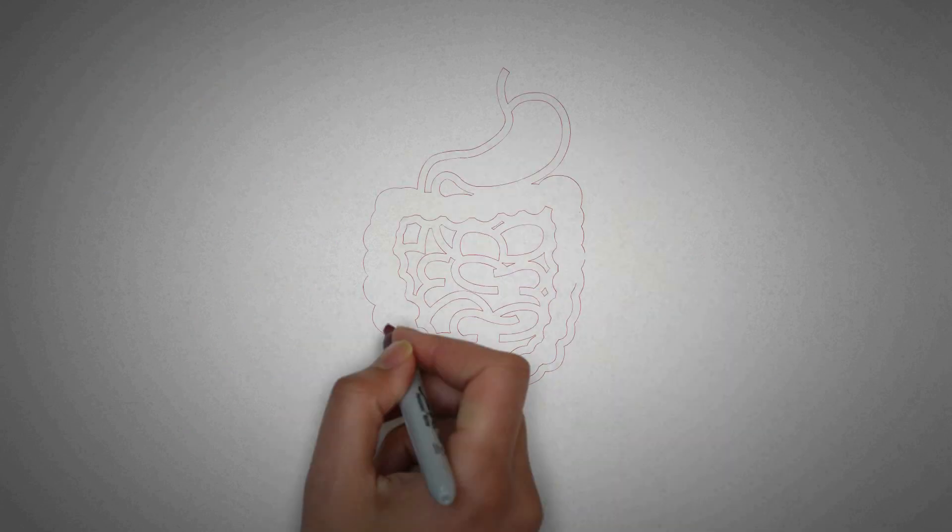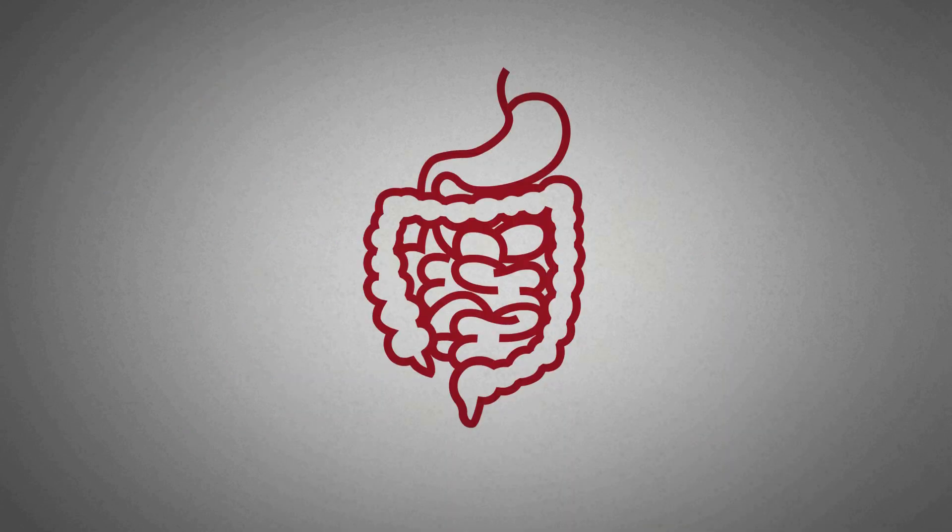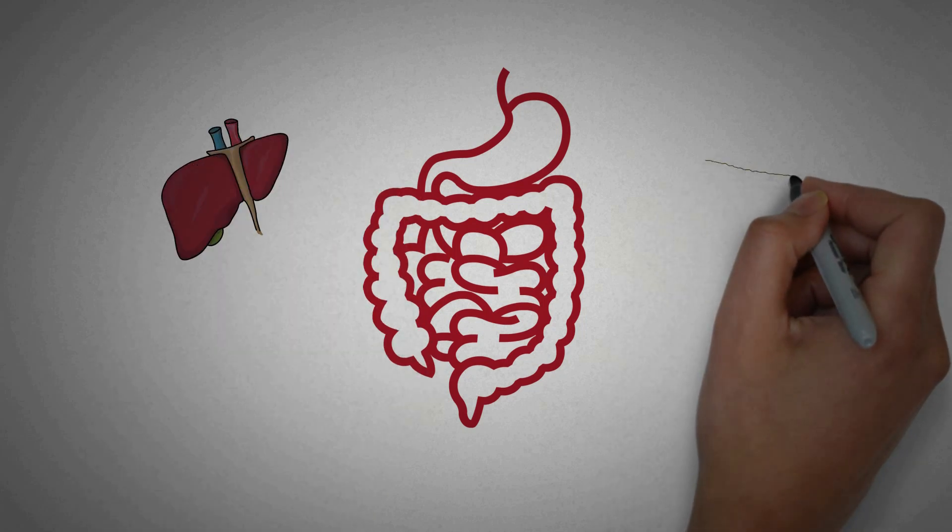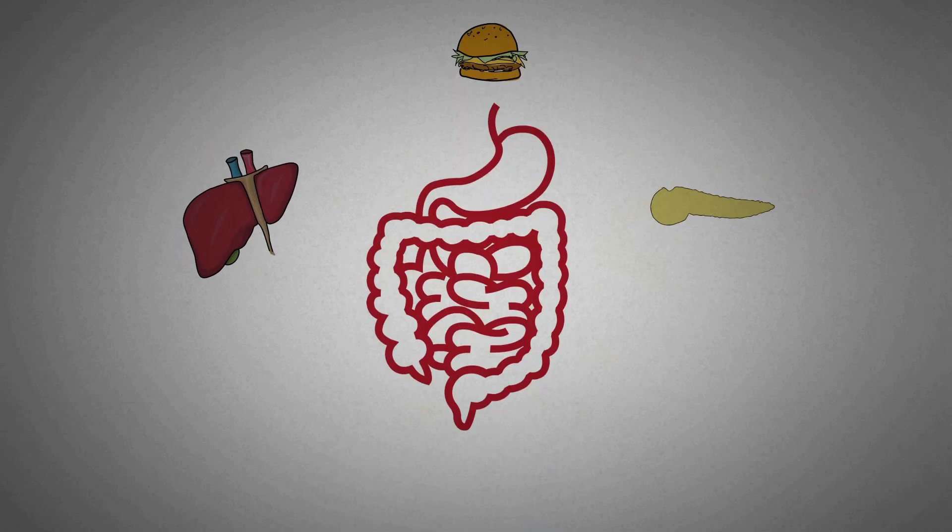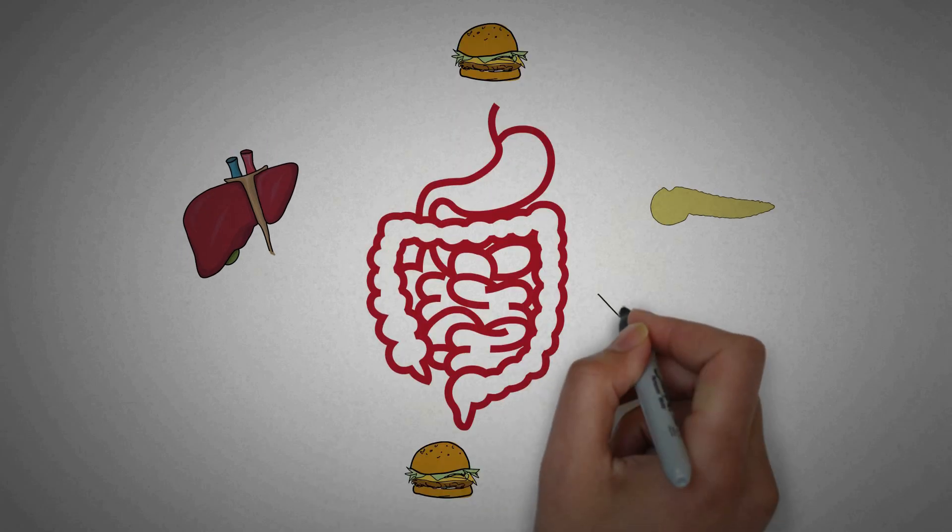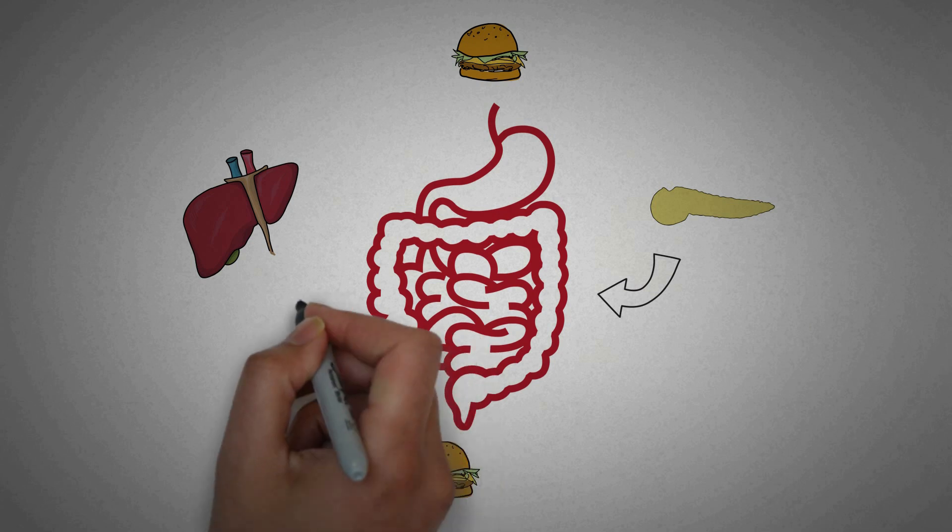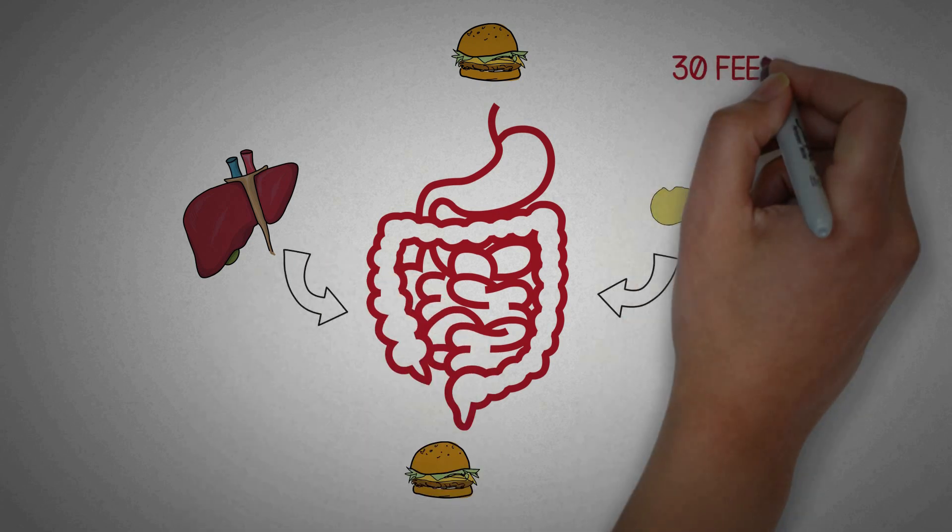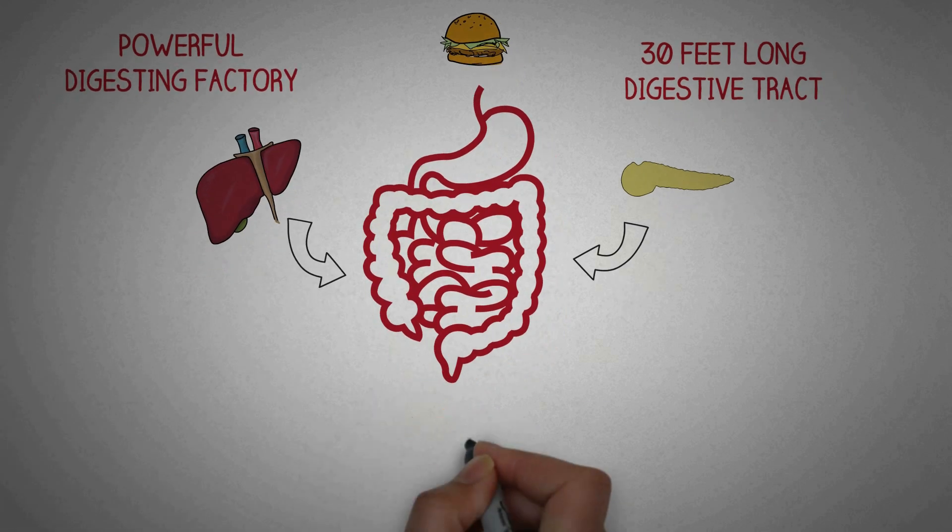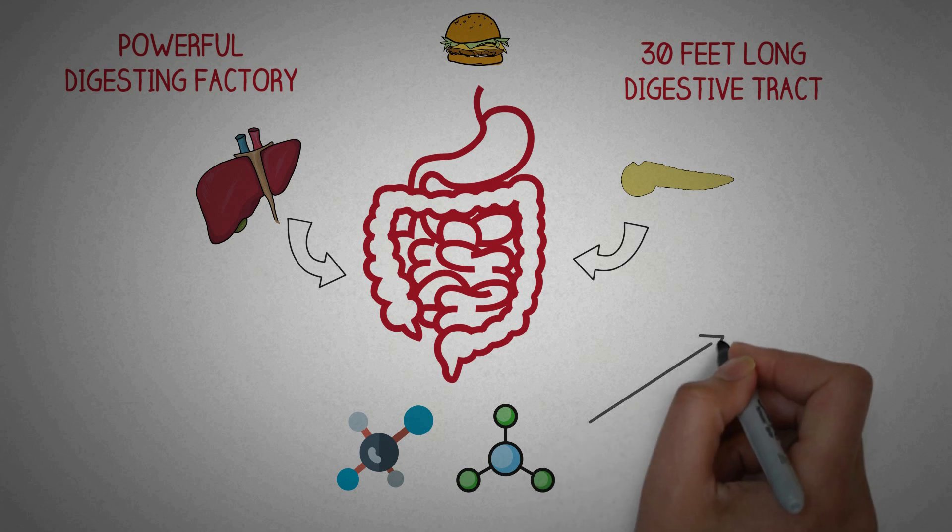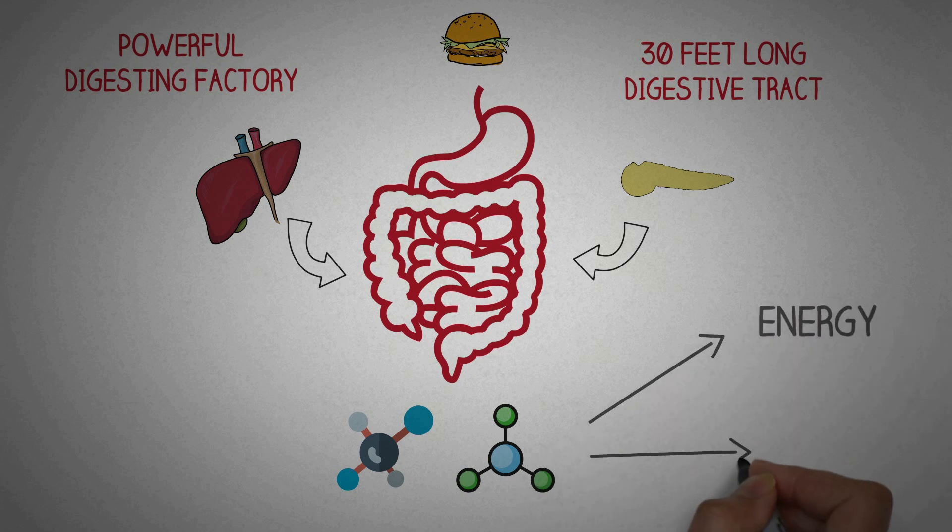So the human digestive system essentially consists of two parts, the digestive tract and the organs of digestion. Without the organs, the digestive tract is just a tube and probably the same stuff will come out that you will put in without the action of the enzymes from these organs. The digestive organs release several chemicals that turn this 30 feet long tube into a powerful digesting factory that converts complex food materials into simple, easy to absorb small molecules that are then utilized by the body for various purposes.